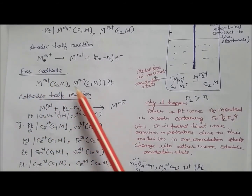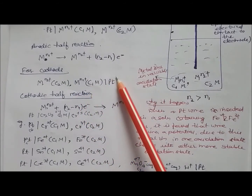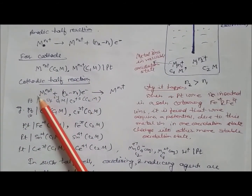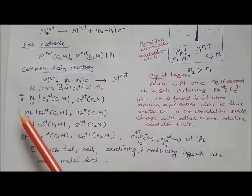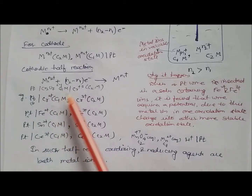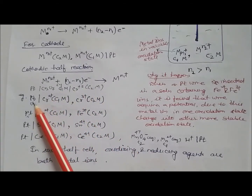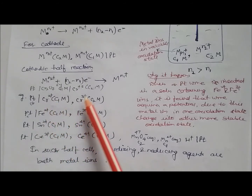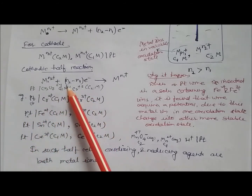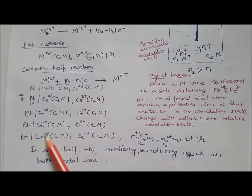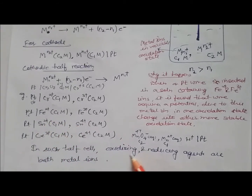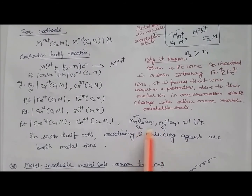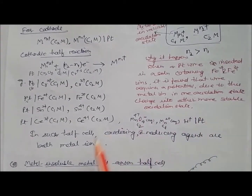For the cathodic half reaction, the notation is: Pt | M^(n+2)+(C2 M), M^n+(C1 M). Examples of redox electrodes at the anode include: Pt | Cr₂O₇²⁻ | Cr³⁺, Pt | Cr²⁺ | Cr³⁺, Pt | Sn²⁺ | Sn⁴⁺, and Pt | Fe³⁺ | Fe⁴⁺. At the cathode: MnO₄⁻ converts to Mn²⁺. In these half cells, both oxidizing and reducing agents are metal ions.